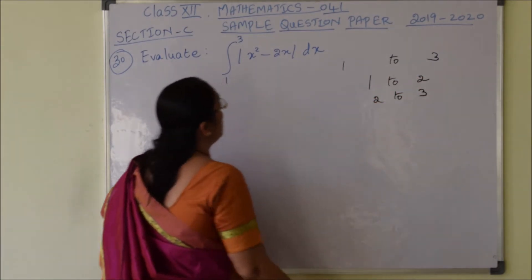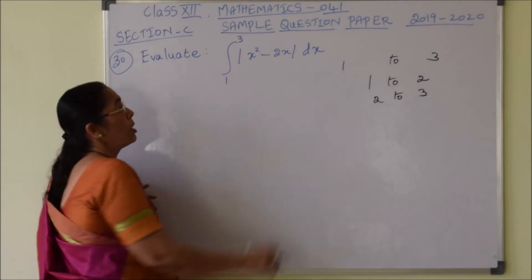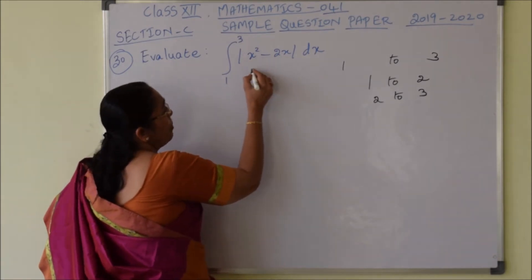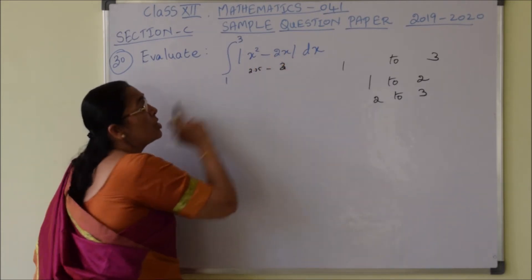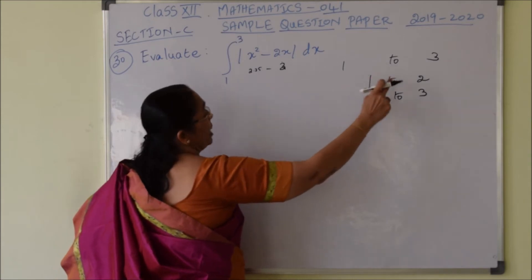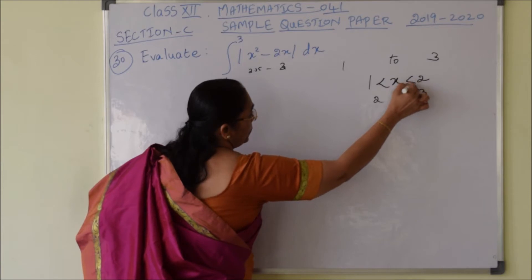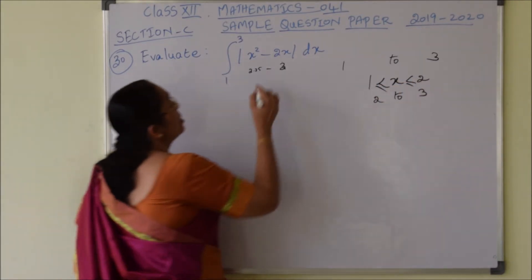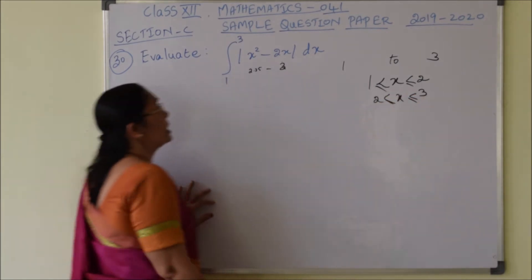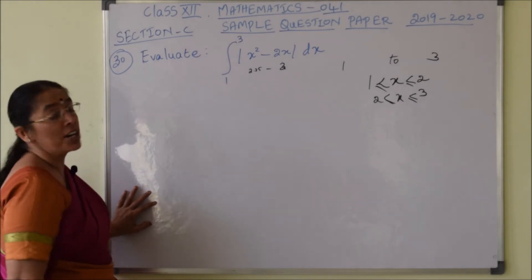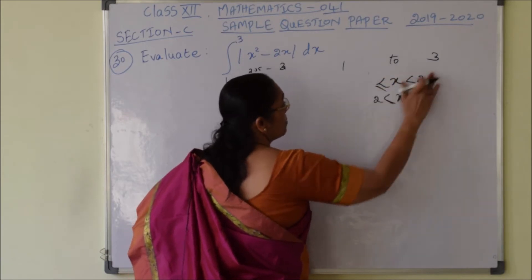To check where the function is positive or negative, take a test value of 1.5 in the interval 1 to 2: 1.5 squared is 2.25, minus 2 times 1.5 is 3, giving a negative result. So the function is negative when x is between 1 and 2, and positive when x is between 2 and 3 (and zero at x equals 2).